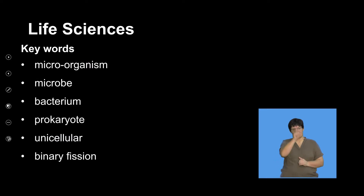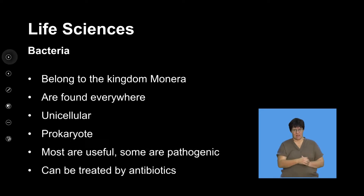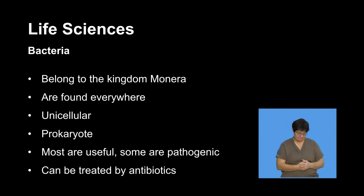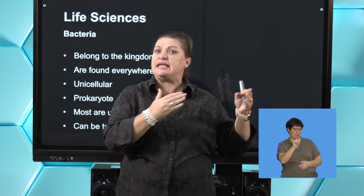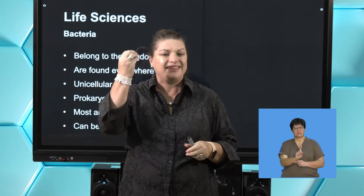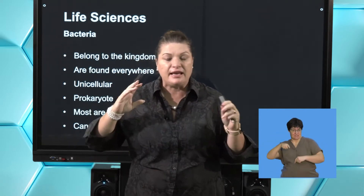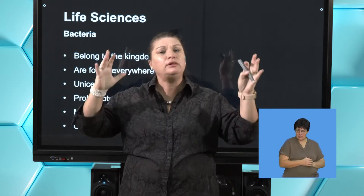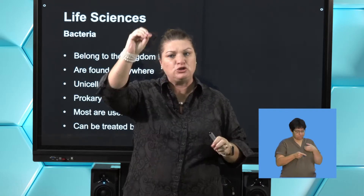I've got keywords on the board; we're going to discuss those terms as we go through them. When we look at bacteria, you might have looked at the section called Classification and Biodiversity in previous modules. Classification means all living things on this planet are put into different kingdoms — it's basically a checklist. If you've got certain criteria, you go into a particular kingdom.